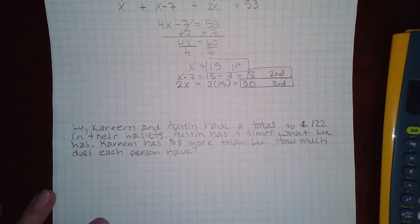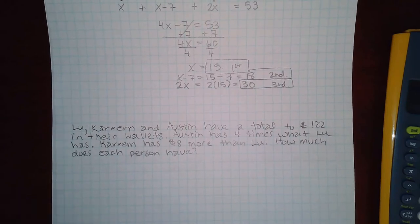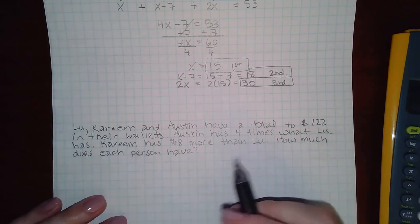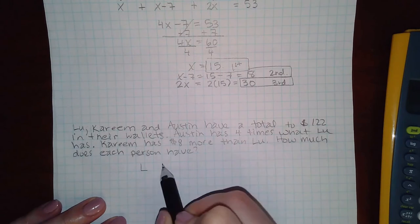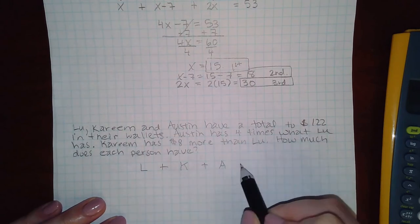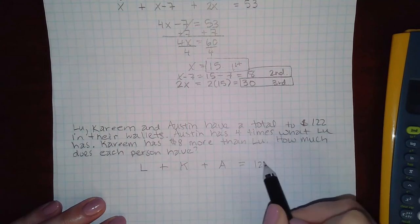Here we have another word problem. It says Lou, Kareem, and Austin have a total of $122 in their wallets. So I have L for Lou, plus K for Kareem, plus A for Austin, and together they should have $122.